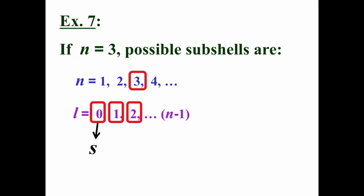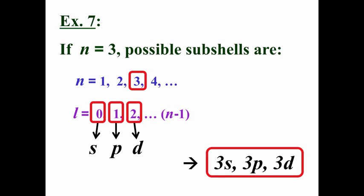And if L equals zero, that corresponds to an S subshell. If L equals one, that corresponds to a P subshell. And if L equals two, that corresponds to a D subshell. So the possible subshells, when N equals three, are three S, three P, and three D. And if you think about it, you already knew that because those are the subshells that we've used for quite a while now when filling electron configurations. But this is sort of the quantum mechanical theoretical basis for why there are three subshells for the third energy level.